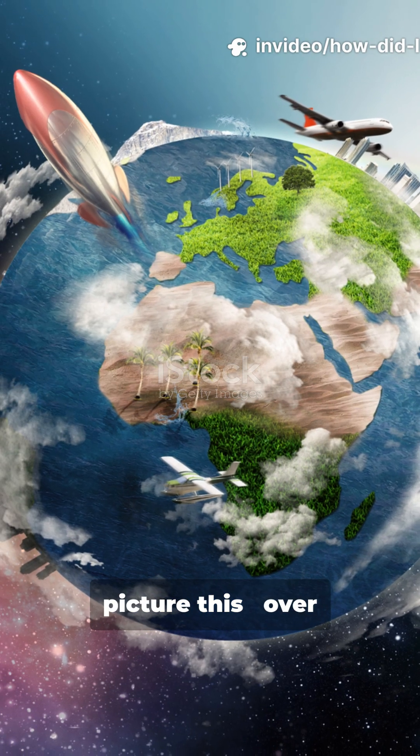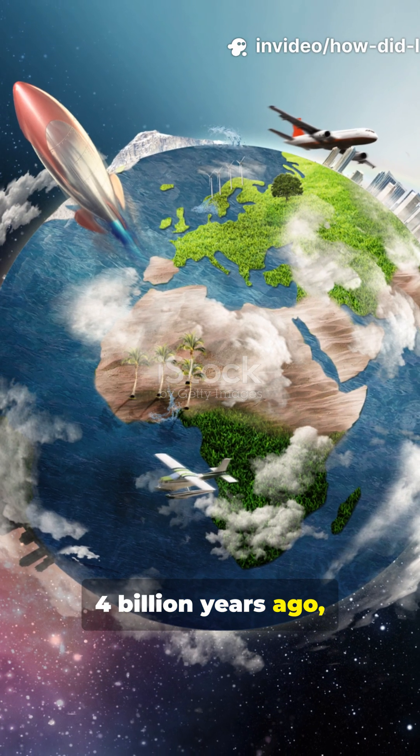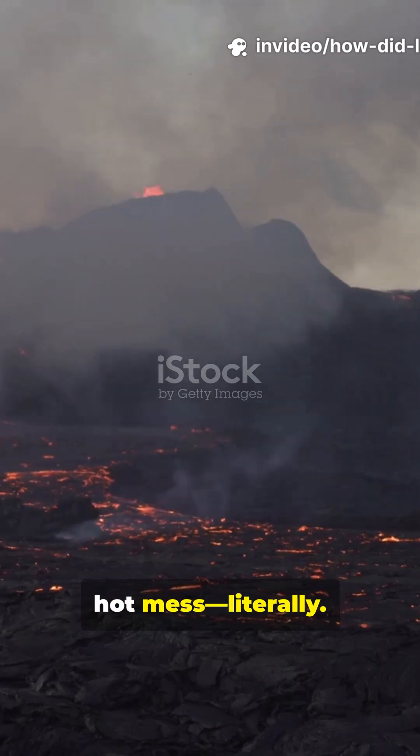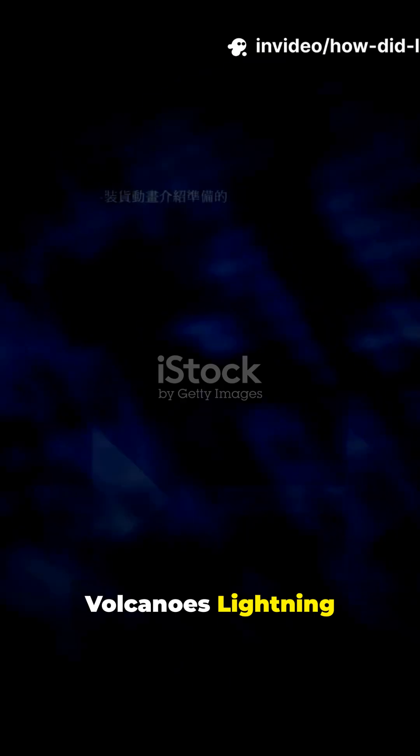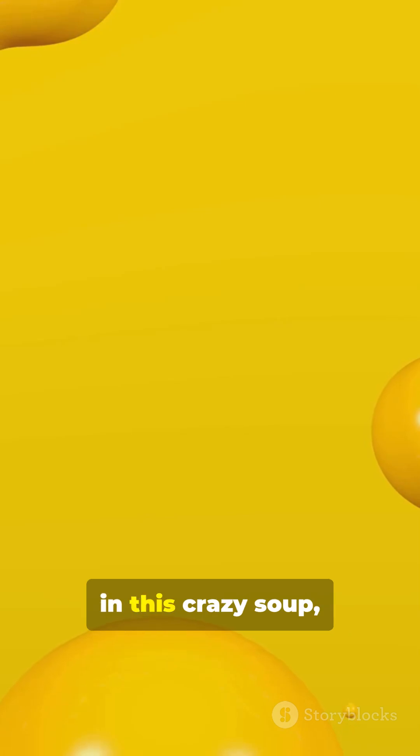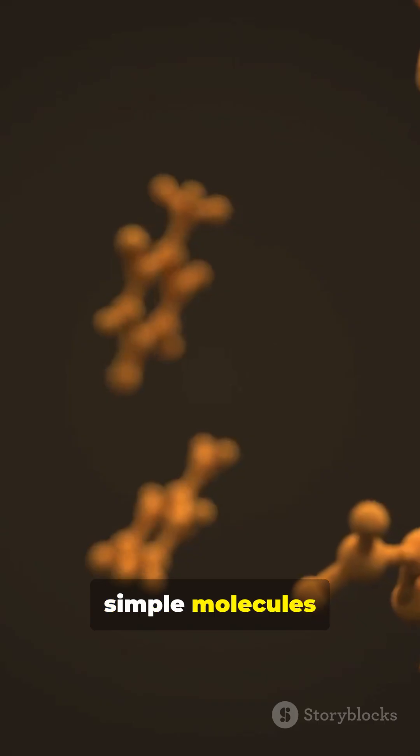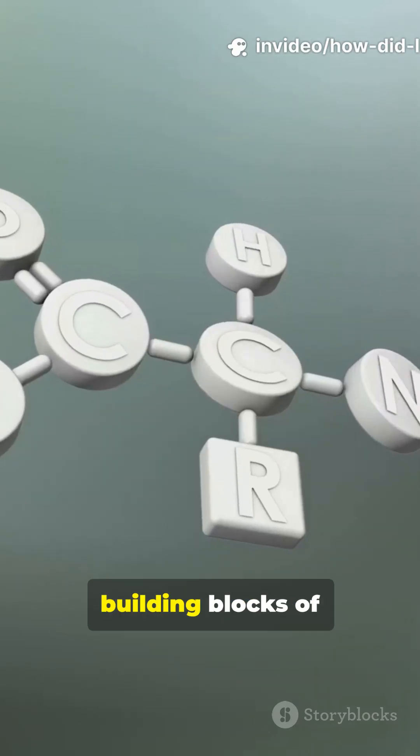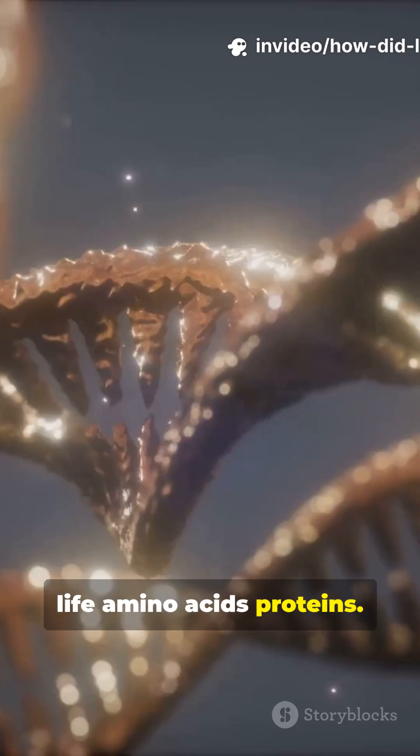So, picture this. Over 4 billion years ago, Earth was just a hot mess, literally. Volcanoes, lightning, oceans swirling with chemicals. Scientists think that in this crazy soup, simple molecules collided and formed the building blocks of life - amino acids, proteins.